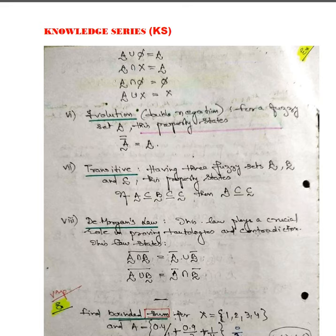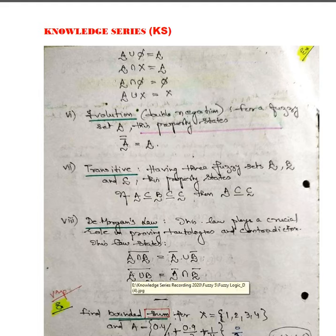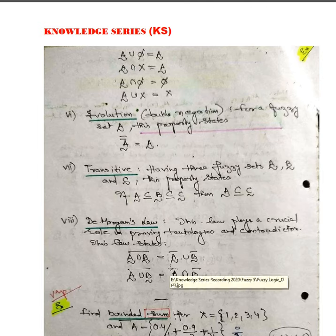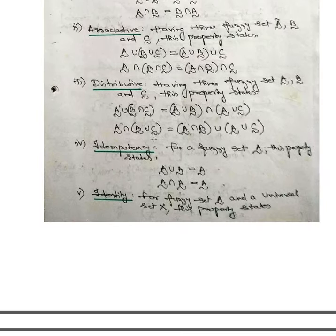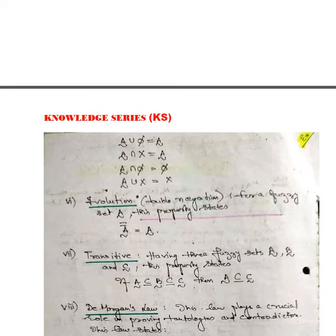De Morgan's law, just like the crisp set: the complement of (A intersection B) equals A-complement union B-complement; and the complement of (A union B) equals A-complement intersection B-complement. This is how the complete Fuzzy Set operations are distributed in different forms.